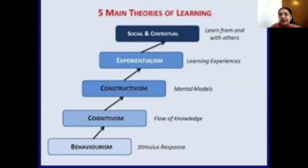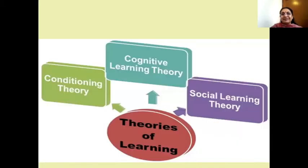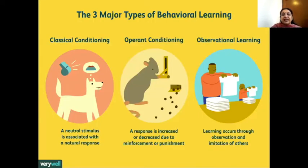There are five main theories of learning: Behaviorism, Cognitivism, Constructivism, Experientialism, and Social and Contextual. We are going to study only three of these in greater detail. We are going to study behaviorism, which is the stimulus response; Cognitivism, which deals with how the information and knowledge flows; Constructivism, which is the mental models; Experientialism, which is the learning experience; and Social and Contextual, where we learn from others. We are going to focus on the cognitive theory, the social learning theory, and the conditioning theory, which is part of the behavioral aspect of how we learn.